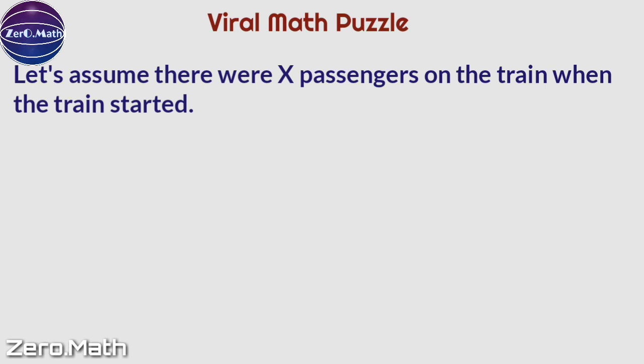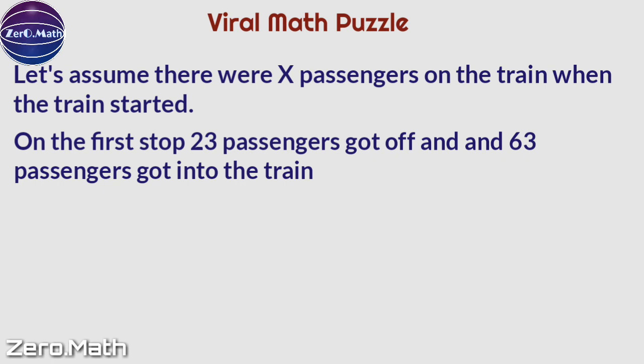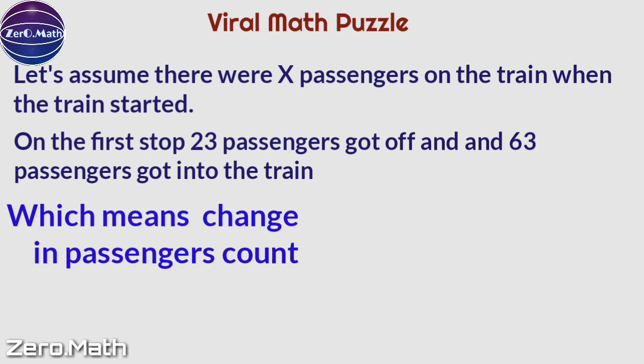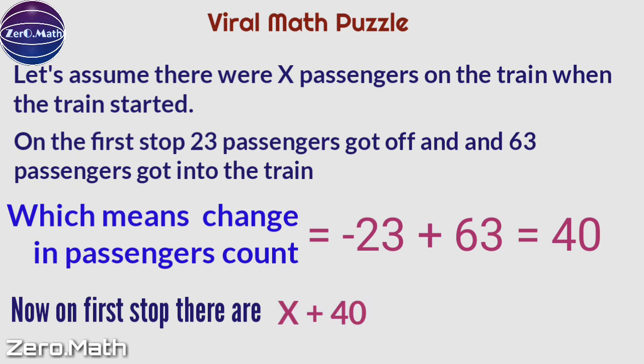Let's assume there were X passengers on the train when it started. On the first stop, 23 passengers got off and 63 got on, which means the change in passenger count equals -23 + 63 = 40. Now on the first stop, there are X + 40 passengers on the train.